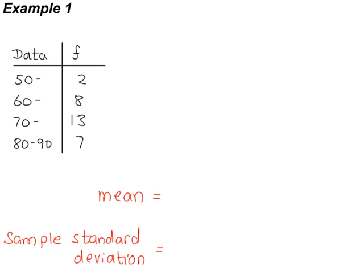Here's an example of a grouped frequency table. You have these particular classes. For instance, this one here starts at 50 and goes all the way up to but not including 60.